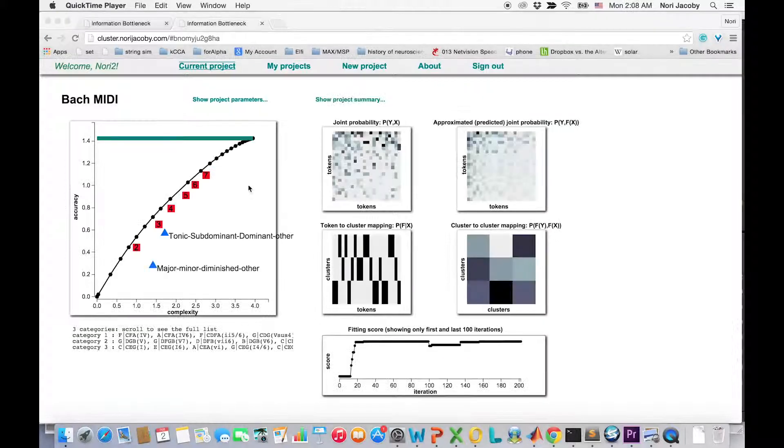Note that the optimal black curve is computed without the assumption of deterministic categorization. Thus, it's notable when deterministic categories shown in red are found near the optimal curve.